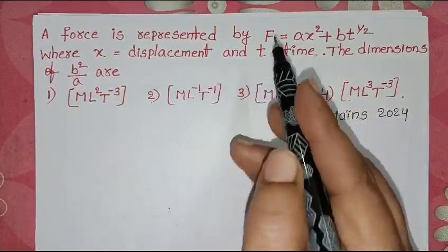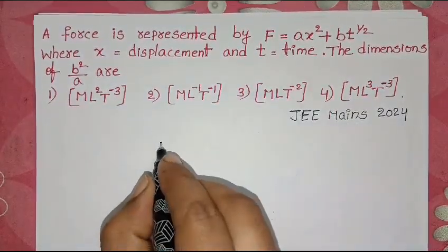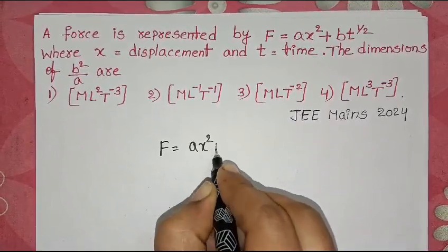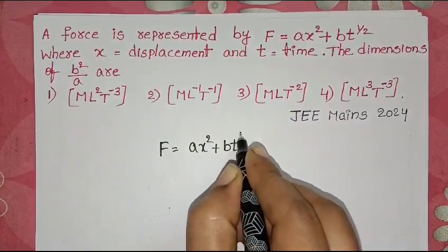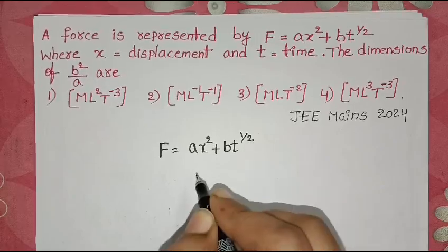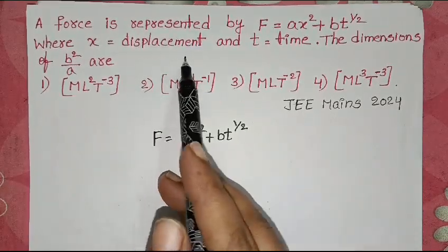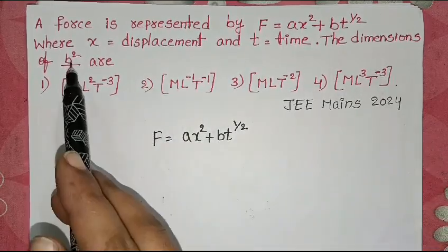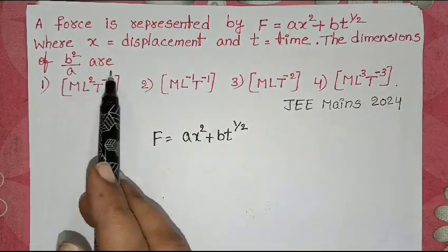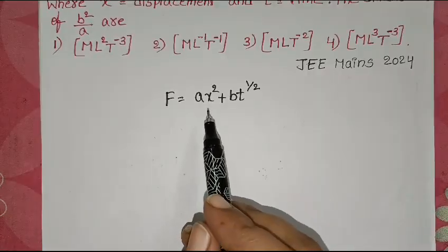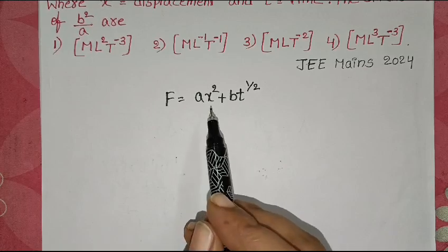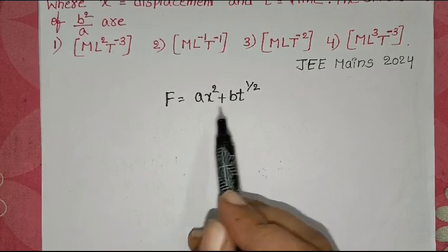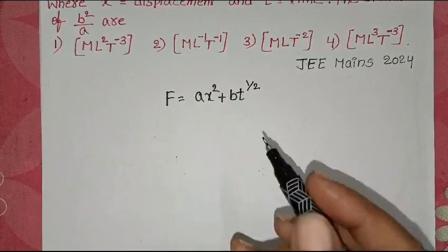A force is represented by F = AX² + BT^(1/2). This is the given equation where X is displacement and T is time. The dimensions of B² by A are to be found. According to the principle of homogeneity, the dimensions of terms that are added, subtracted, or equated must be the same.